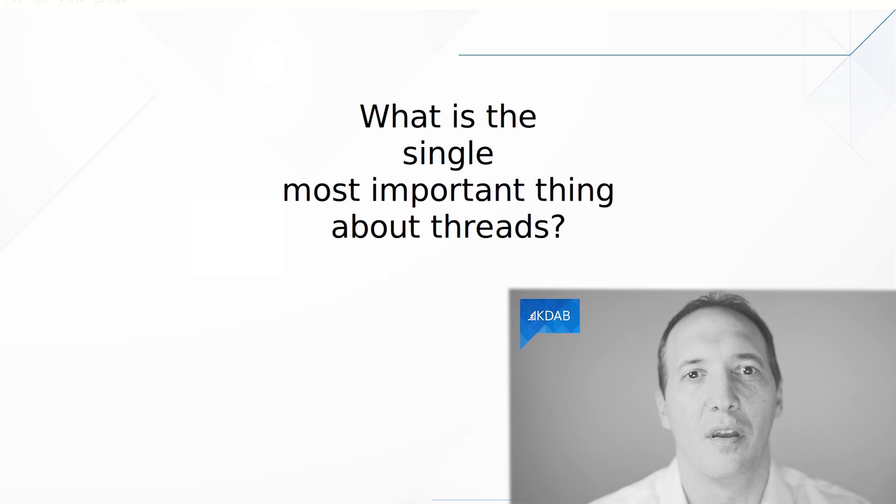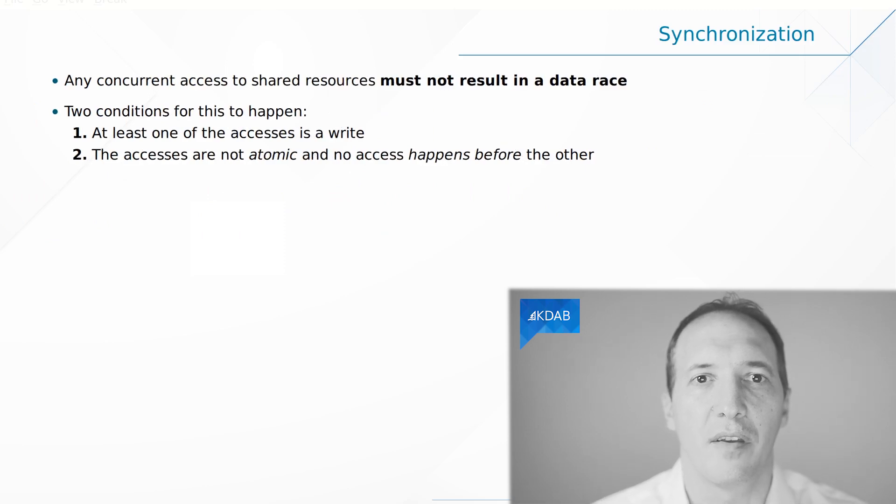So we wanted to talk about the important things with multithreading, which is what is the most important thing. It is to make sure that we don't access the same memory from two different threads without synchronization. This leads to data races. More precisely, a data race happens if you have two different threads accessing a memory region and at least one of the two accesses is a write and the accesses are not atomic and they are not covered by synchronization.